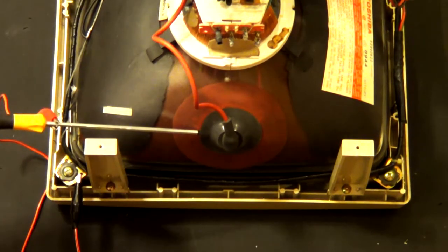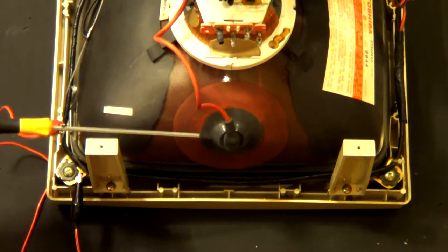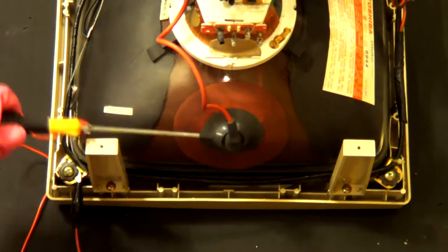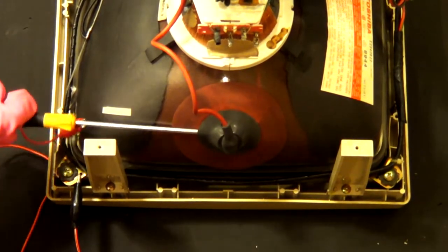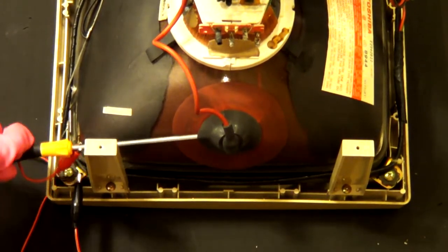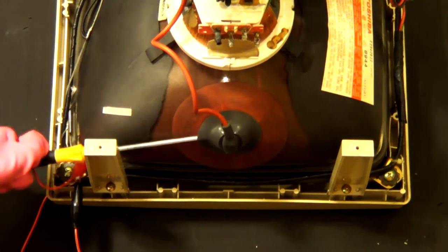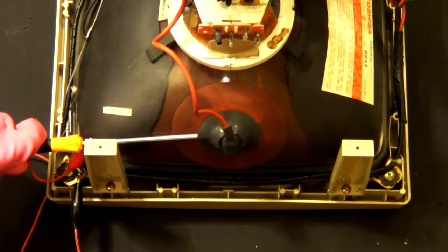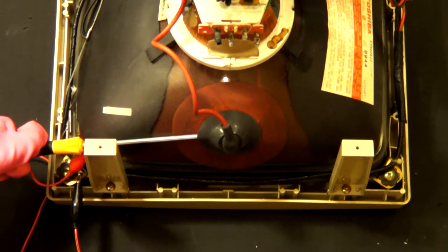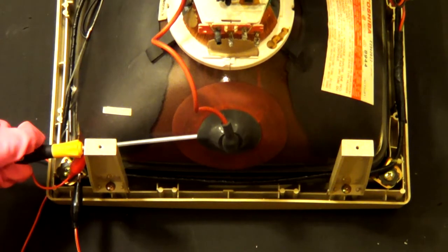Gently slide the flat head screwdriver under the rubber suction cup, and be sure that the flat head screwdriver is touching the metal prongs connection. When the screwdriver touches the metal prongs, you should be able to hear a static sound, and it could be loud, faint, or none at all. But regardless, you have to do this step.